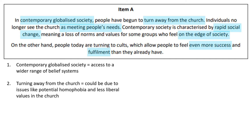Secondly, people are turning away from the church. One reason could be because of things like potential homophobia in the church, more traditional values, not allowing sex before marriage, and seeing lots of things as a sin that people nowadays like to indulge in. Churches tend to have less liberal and more traditional values, which some sociologists argue particularly puts off young people. However, not all churches are traditional and strict — many liberal churches accept everyone, and same-sex marriage is now legal. So that's a good evaluation for that point.